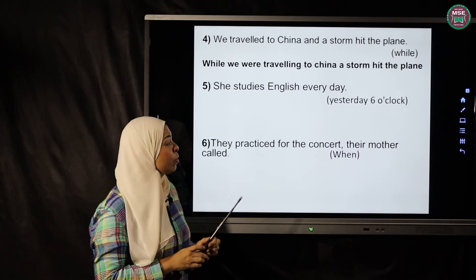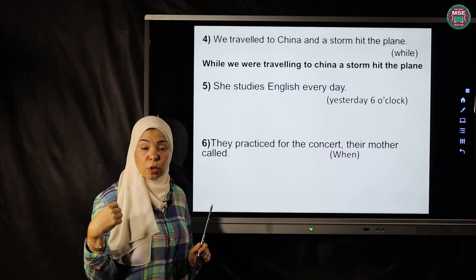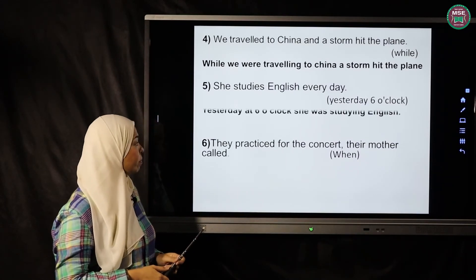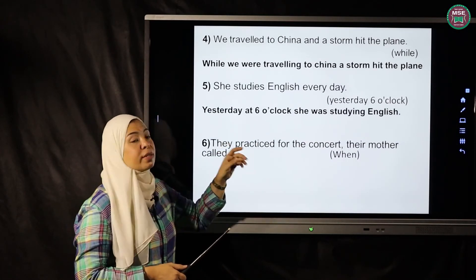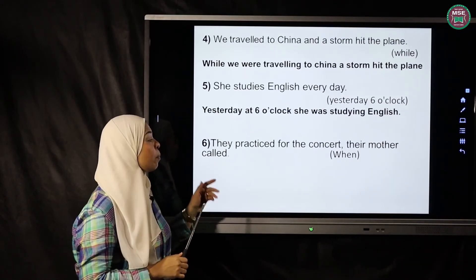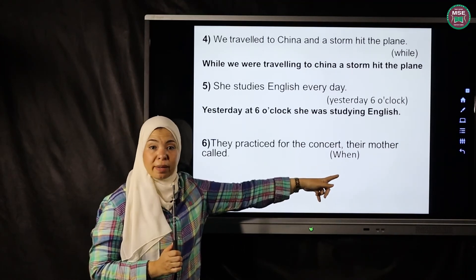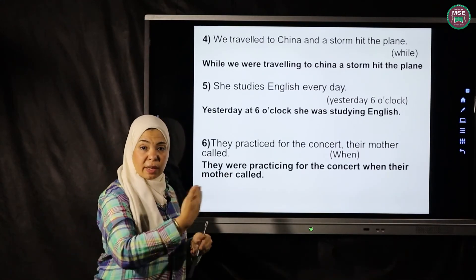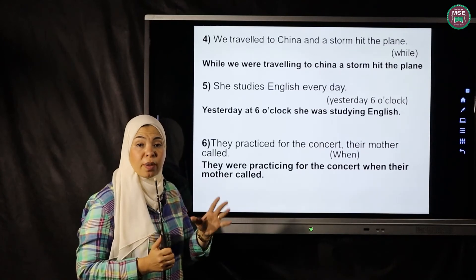Fifth exercise: 'She studies English every day' — rewrite using 'yesterday at six o'clock'. A specific time in the past requires past continuous: 'Yesterday at six o'clock she was studying English.' Sixth exercise: 'They practiced for the concert. Their mother called' — rewrite using 'when'. Long action in past continuous, interrupted by short action: 'They were practicing for the concert when their mother called.'